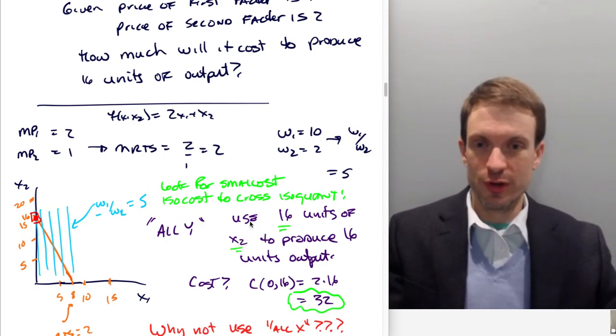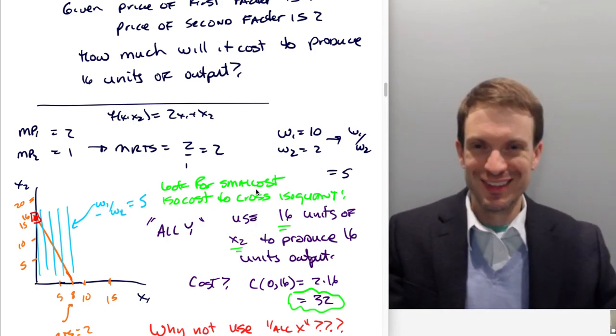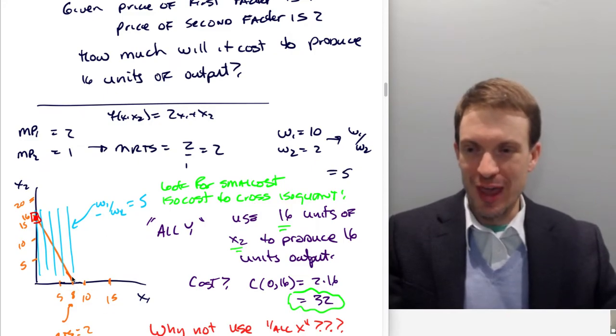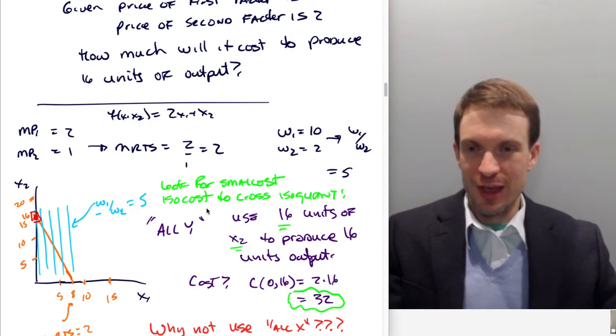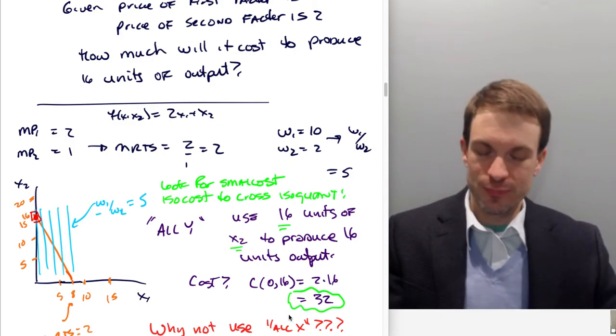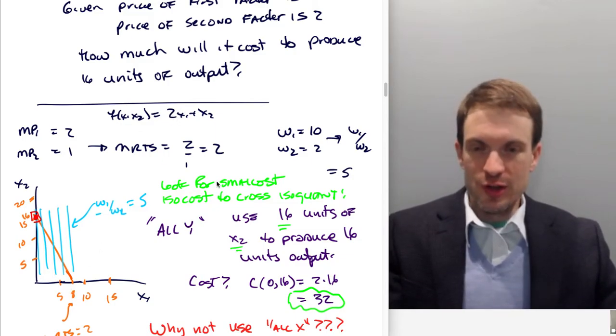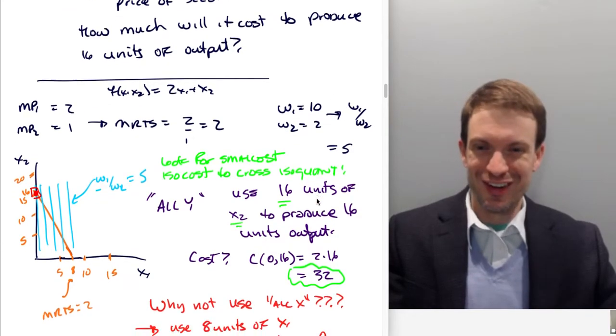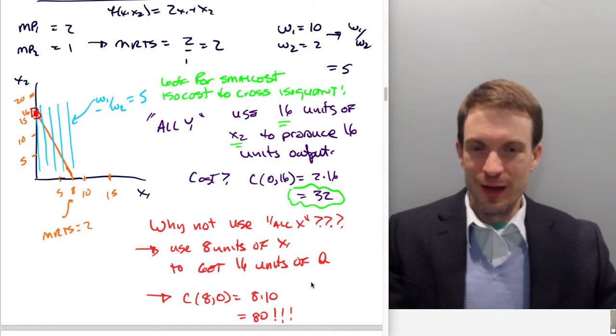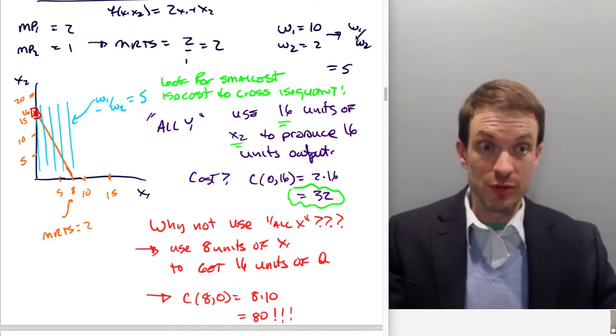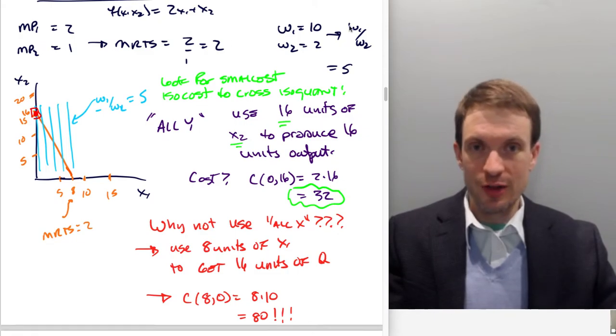What's this going to cost? Well, the cost of this input bundle is going to be 2 times 16, because the factor price was 2, or 32 units. And then just for completeness, why didn't we just use all x? If we use all x, we'd have to use 8 units of factor 1 to get 16 units of output. Those 8 units are going to cost us 10 each, so that's a cost of 80. Clearly, the cost minimization is going to happen with using only factor 2 and not using factor 1, given this production technology and these input prices.